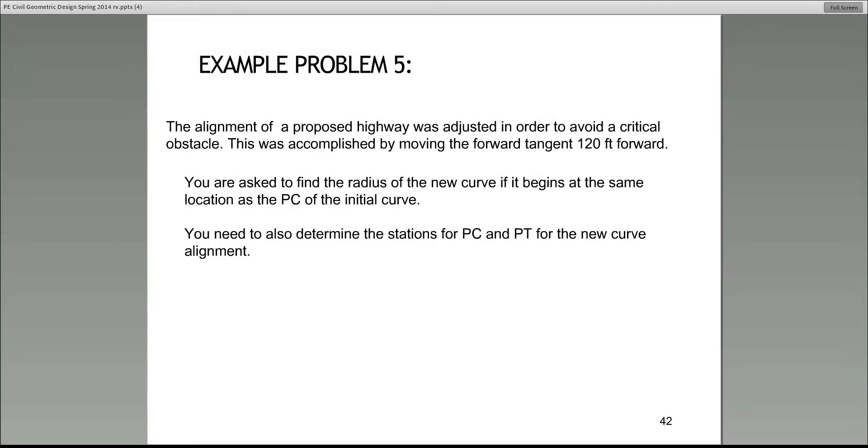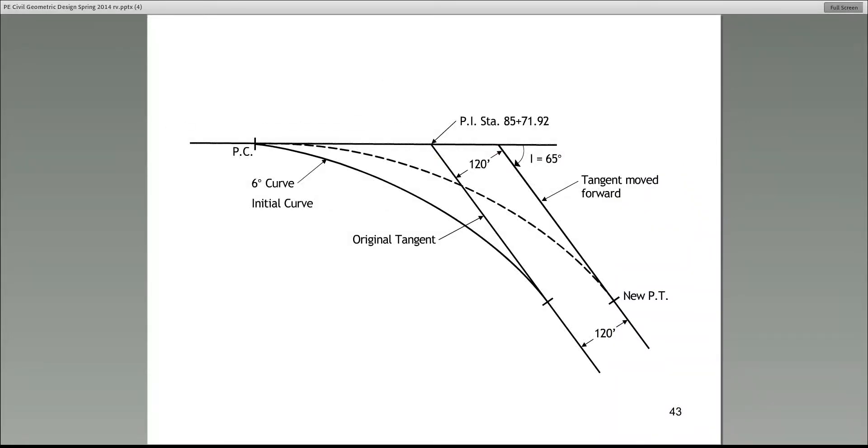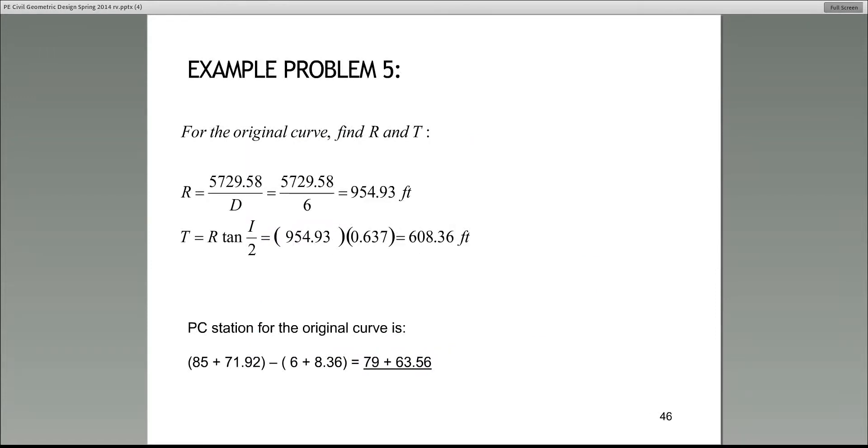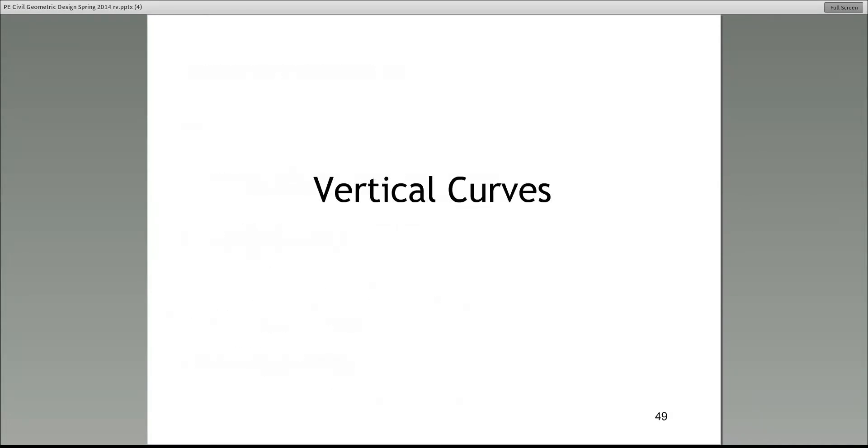I need to move to the next problem. This problem is very similar to the previous one. So I'm not going to go through the solution. Here, it says the forward tangent is moved 120 feet forward. So in this case, the tangent was moved forward. Again, remember, the distance 120 feet is that distance, perpendicular. And again, this problem reduces to this. I leave it up to you. Do it later. Find x. And then you can answer whatever they asked for, the radius and also T. The complete solution is provided, so you can follow it and make sure that you get the correct answer.